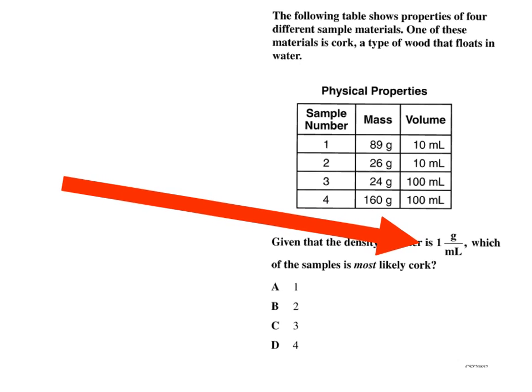then you know that it's going to have to be some value that's going to be less than one, because if it's less than one it's going to float. If it's greater than one, it's going to sink.